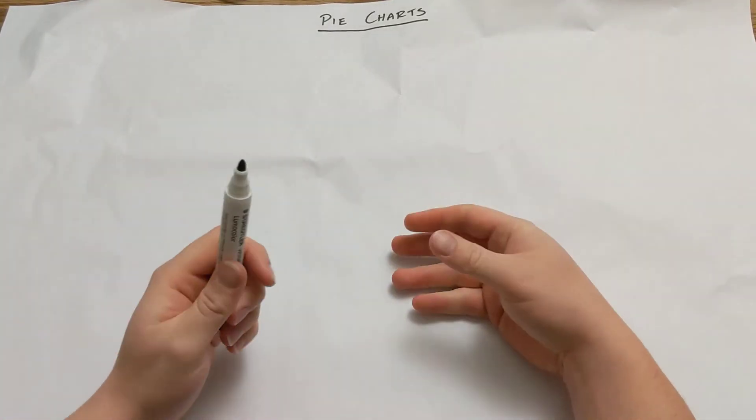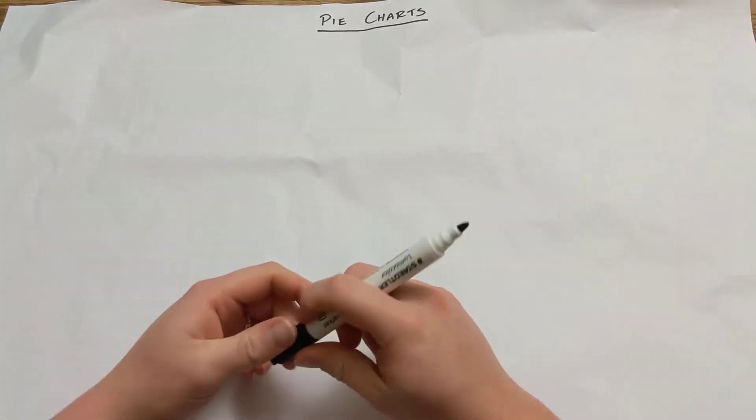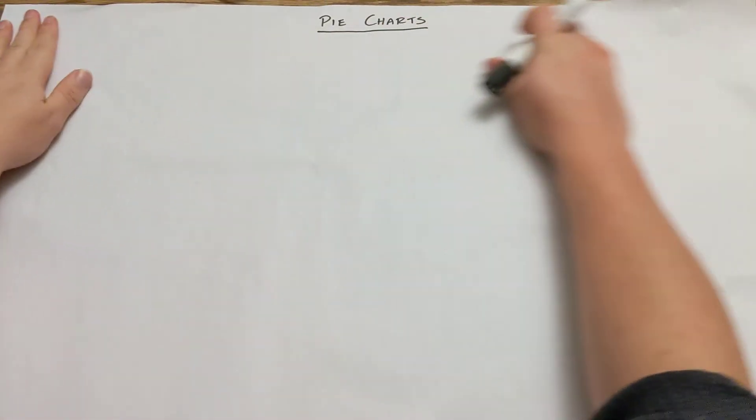This follows under the numeracy part of the course. This is something we should have seen before, we did it at National 4, and you should have seen it earlier as well in S2, actually in S1. So hopefully this is quite a lot of revision, and if you've forgotten it, it comes back to you fairly quickly.